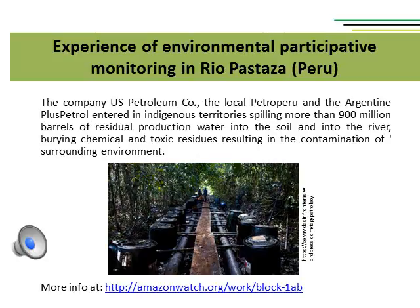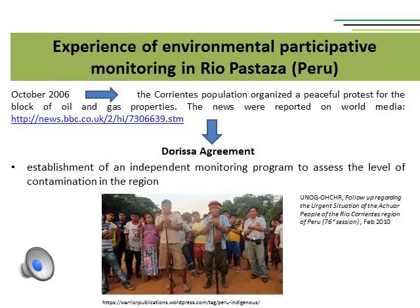A practical application of civic participation applied to environmental conflicts comes from Peru. The companies U.S. Petroleum, the local PetroPeru and the Argentine Plus Petrol entered indigenous territories, spilling more than 900 million barrels of residual production water into the soil and into the river Pastaza, and burying chemical and toxic residues, resulting in contamination of the surrounding environment. In October 2006, after several failed negotiations between the government and the enterprises, the local population organised a peaceful protest asking for a block on oil and gas operations. Following the protests, the government and Plus Petrol signed an agreement that included, among other things, the establishment of an independent monitoring program to assess the level of contamination in the region.